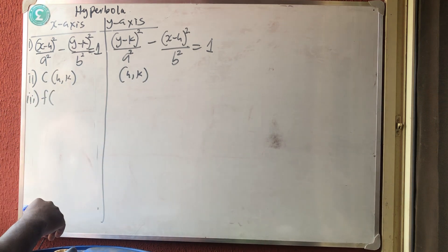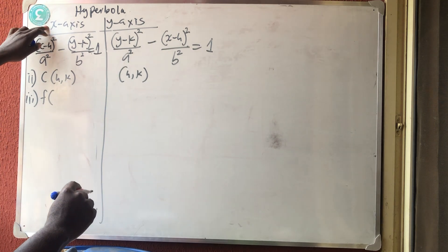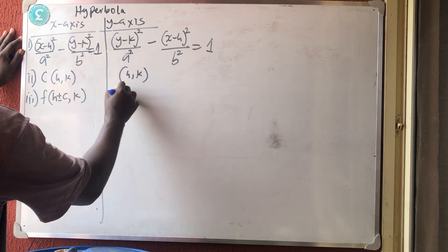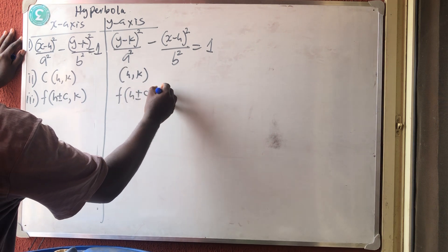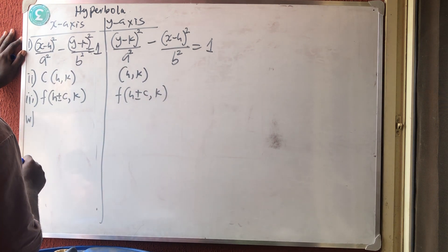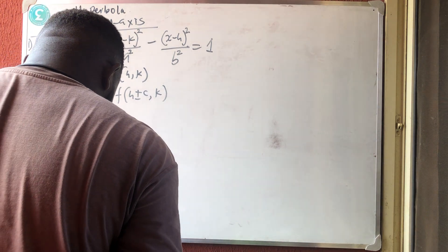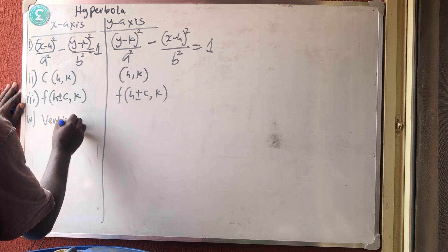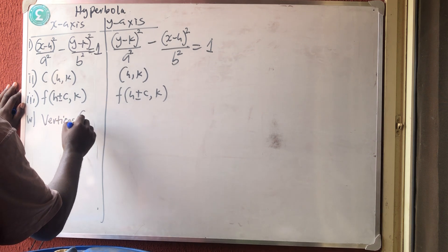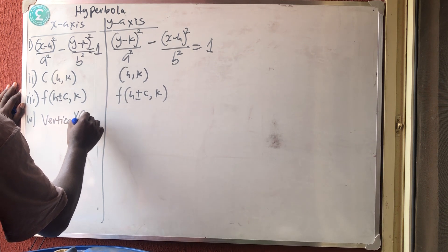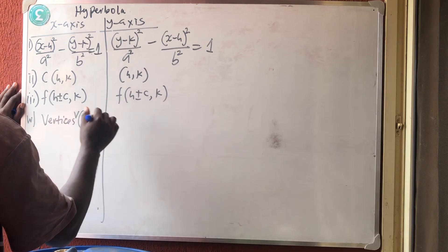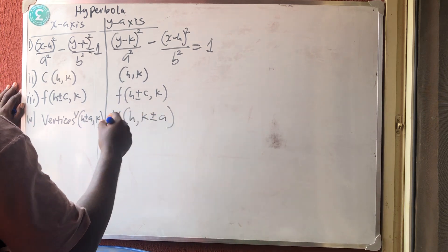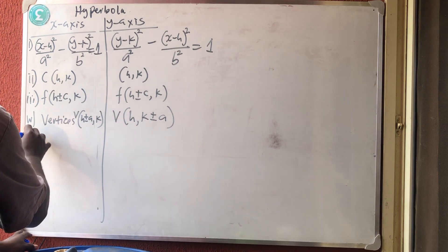For the foci: since this is parallel to x, you are adding c to the x-side, so the foci are at (h ± c, k). For the vertices: you are adding a, so the vertex is V(h ± a, k) for the x-facing hyperbola, and (h, k ± a) for the y-facing one.